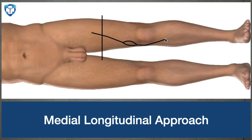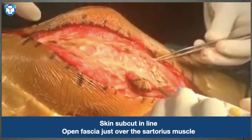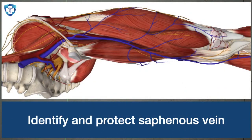After taking the skin incision, we cut the subcutaneous tissue in line with the skin incision. Here we identify and protect the saphenous vein. We can see the saphenous vein arising from the femoral triangle and running along the sartorius muscle — we need to identify and protect this vein.